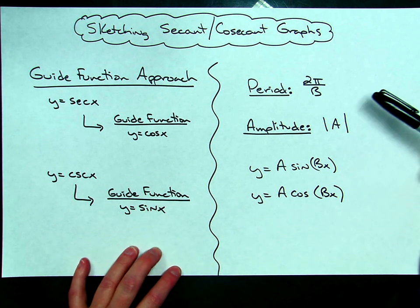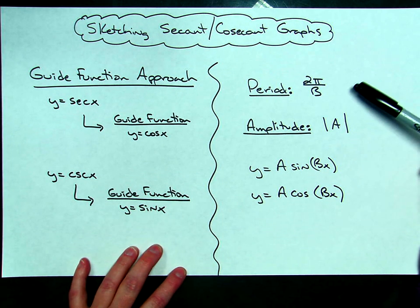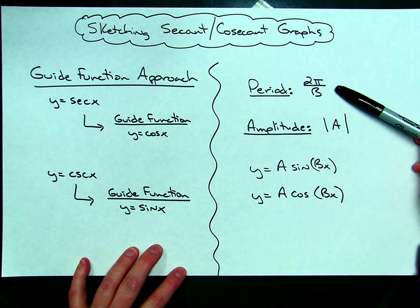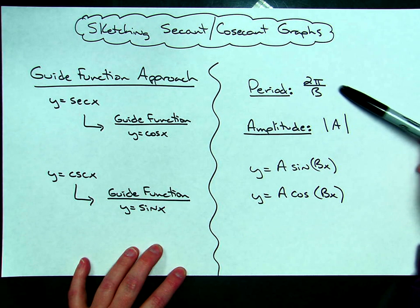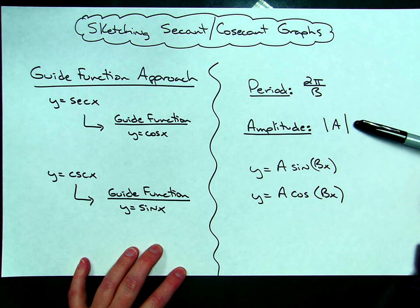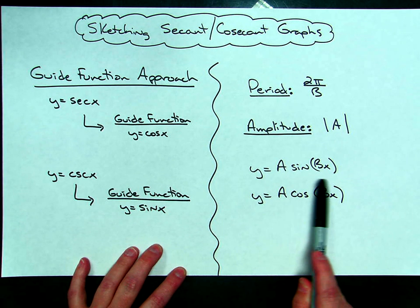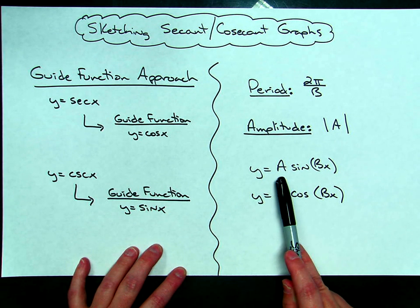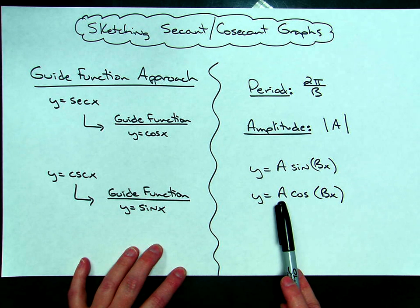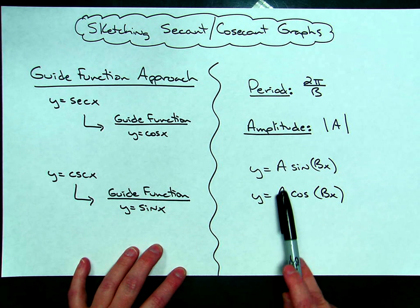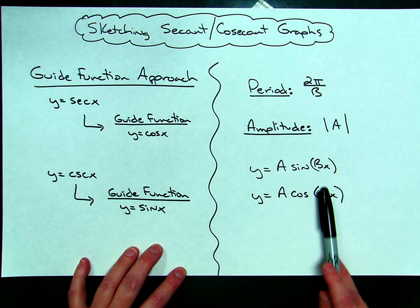Everything is going to remain the same. We'll still calculate our period using the formula 2π over b, and we'll still calculate our amplitude with the absolute value of a. As a refresher, the coefficient a sits in front of the trig function, and your b coefficient is in front of your x.